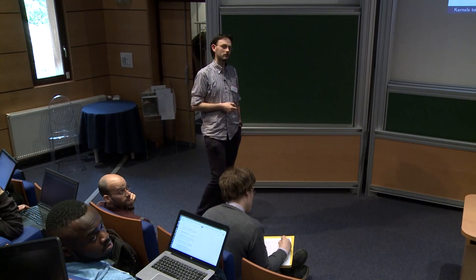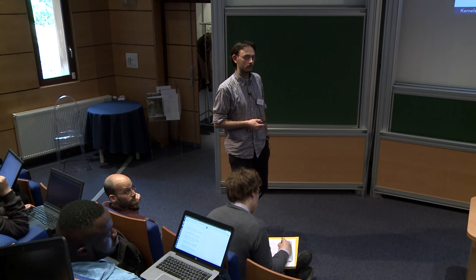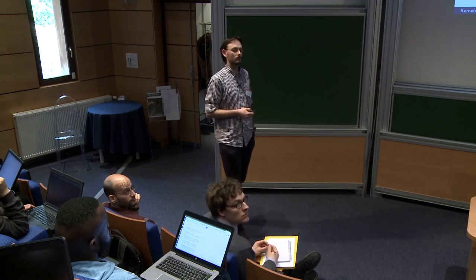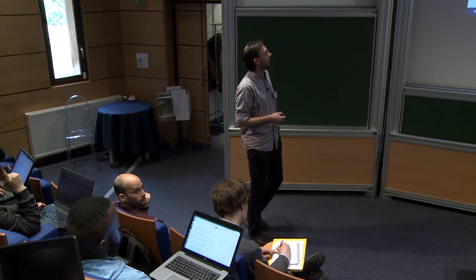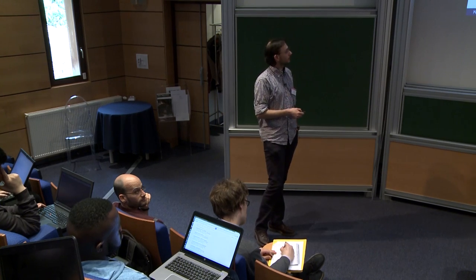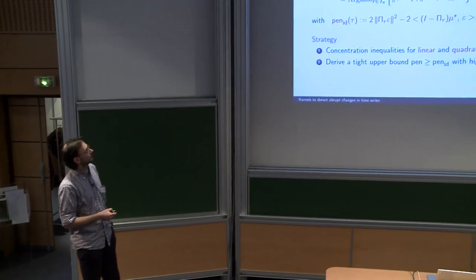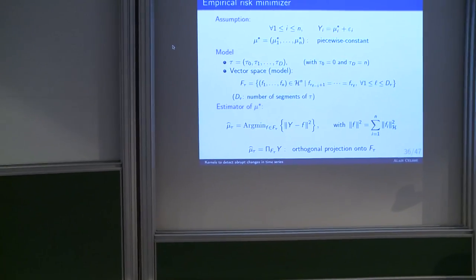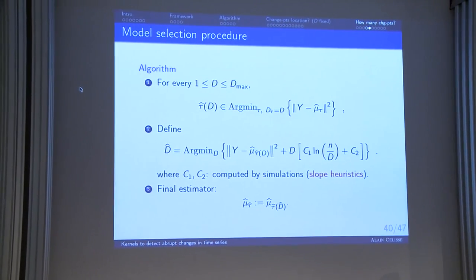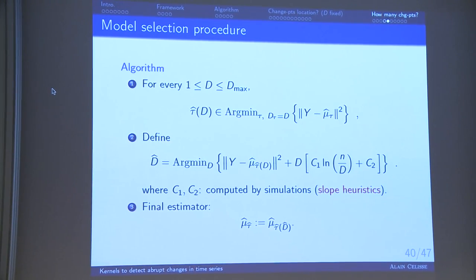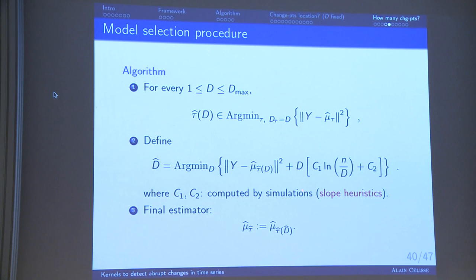A question is raised about how D_max is chosen and whether model selection performance degrades if D_max is too small or too large. In practice, except in very extreme situations, the choice of D_max is influential. In the simulations, D_max was chosen to be 100, while D* = 11, and the algorithm provides reliable results with lower values as well. The slope heuristic requires exploring a sufficient range of D values to estimate c₁ and c₂ reliably.